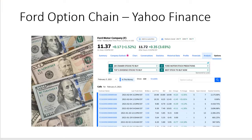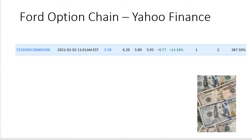Here is the Ford option chain and the associated prices from Yahoo Finance. We see the name of the company and the ticker symbol, as well as several different contracts and the prices for each contract. This specific contract shows F for Ford, expiring February 5, 2021. It is a call option with a strike price of $5.50. The stock was trading at $11.37 at this moment. The last price this option traded for was $6.20, the current bid price is $5.80, and the asking price is $5.95. Additional columns represent the change in price, the percent change, the volume of options contracts traded, and the open interest. The last column is implied volatility.